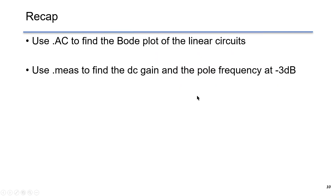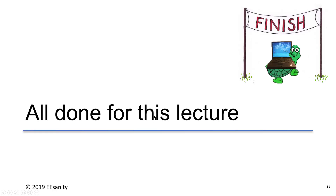Just to recap: in this lecture we studied AC analysis to find the Bode plot of a low-pass filter. You can use this method in any linear circuitry. In addition, we used the measurement function to find the DC gain and the single pole frequency at minus 3 dB. Thank you very much. See you next time.